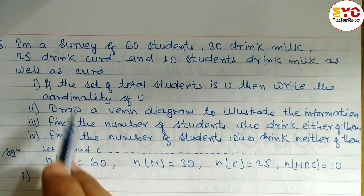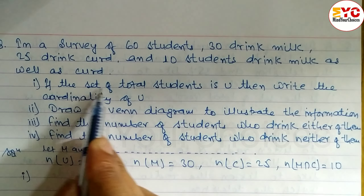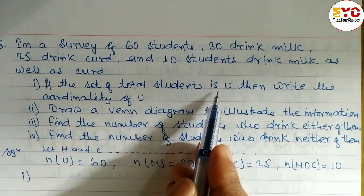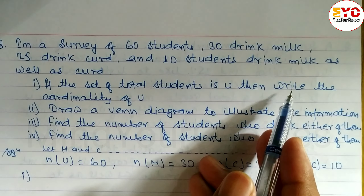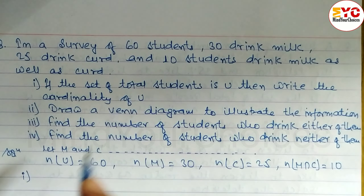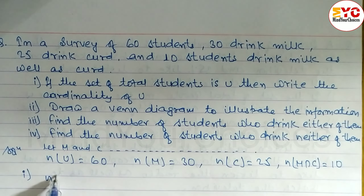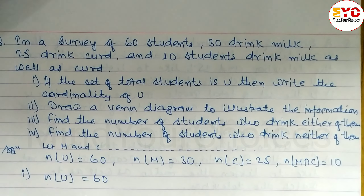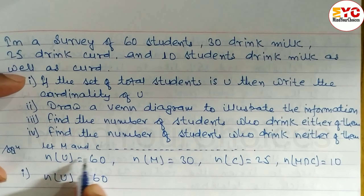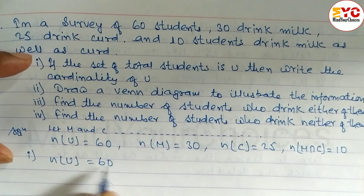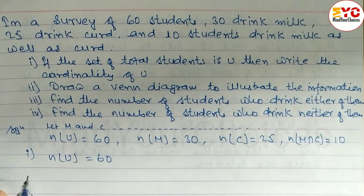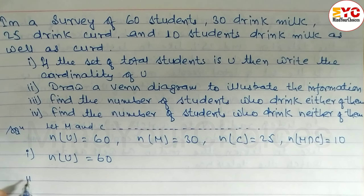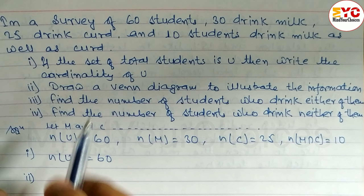Number 1: the question says — if the set of total students is U, then write the cardinality of U. So n(U) is equal to 60. We already have that information written. Now Number 2 question.